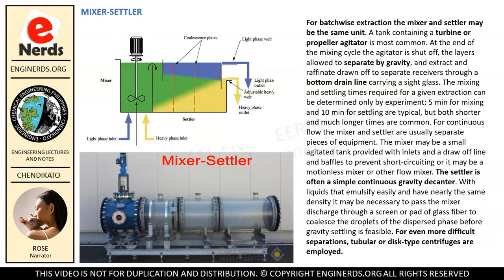Let us first discuss the Mixer-Settler equipment. For batch-wise extraction, the mixer and settler may be the same unit — a tank containing a turbine or propeller agitator is most common. At the end of the mixing cycle the agitator is shut off, the layers are allowed to separate by gravity, and extract and raffinate are drawn off to separate receivers through a bottom drain line carrying a sight glass. The mixing and settling times required can be determined only by experiment; 5 minutes for mixing and 10 minutes for settling are typical, but both shorter and much longer times are common.